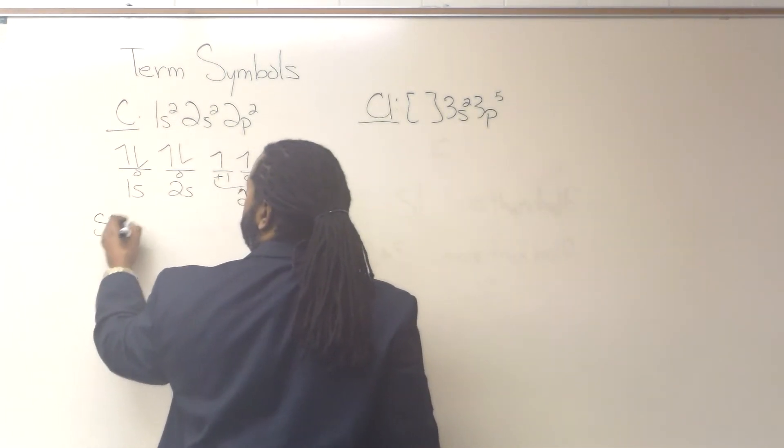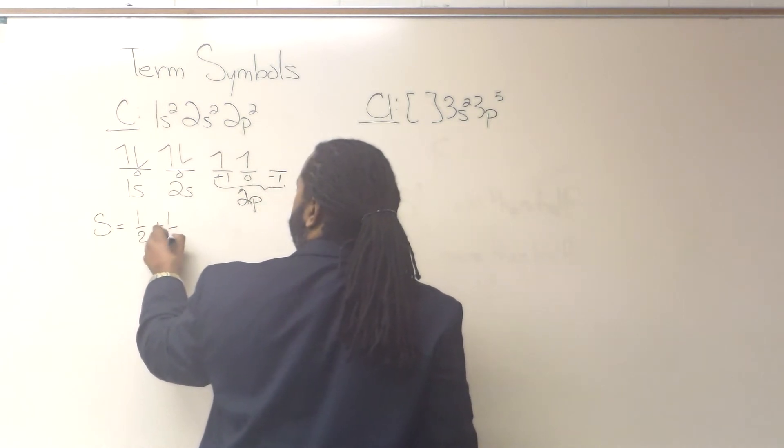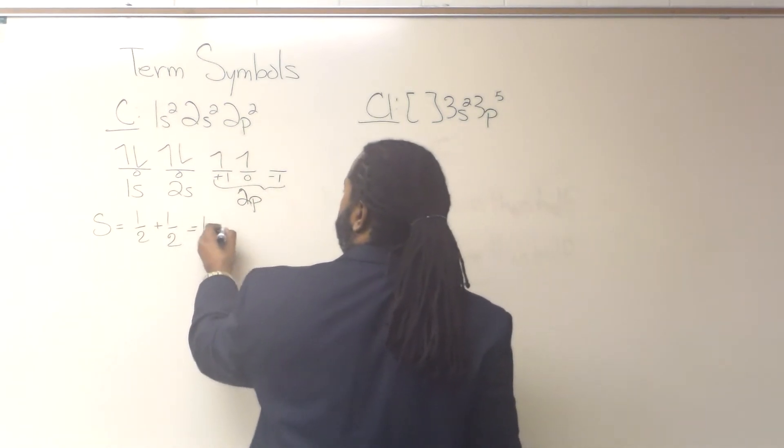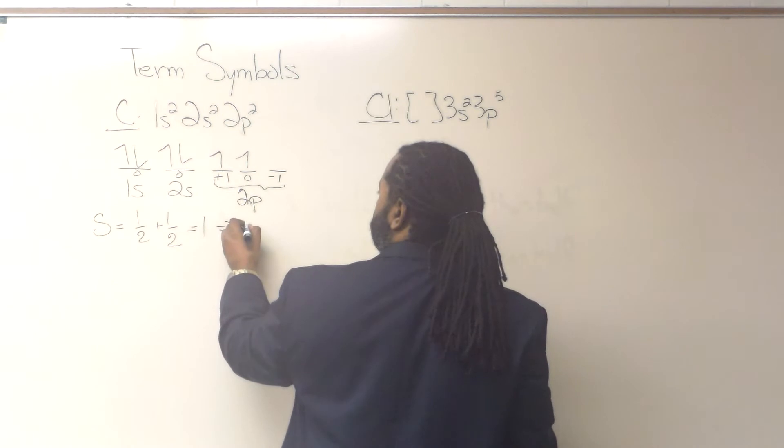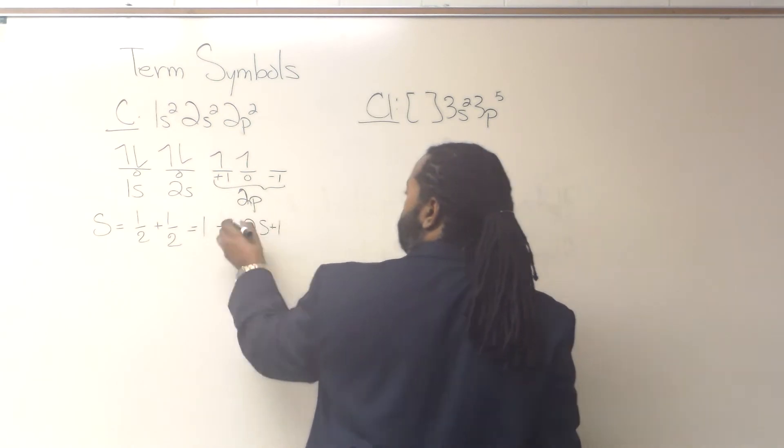So to find a value for s, we have plus 1 half and another plus 1 half. That's equal to 1, which means that our 2s plus 1 term is going to be a 3.